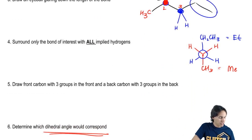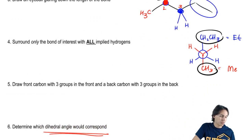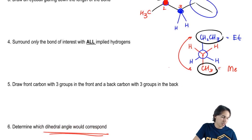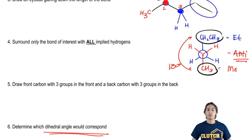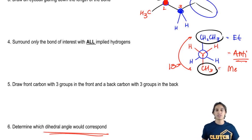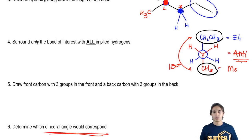What I have is a large group in the back and a large group in the front. They appear to be 180 degrees away from each other. So this would be anti. This would be your right answer and what would get you the points on the exam.